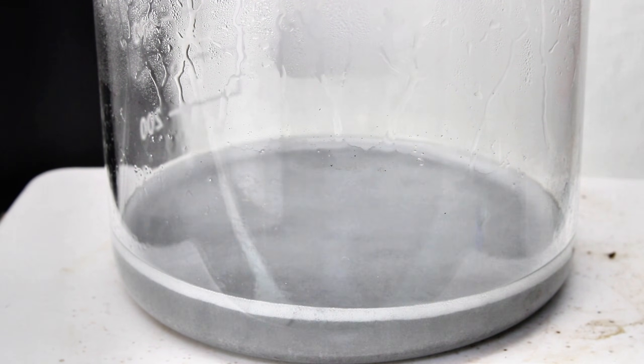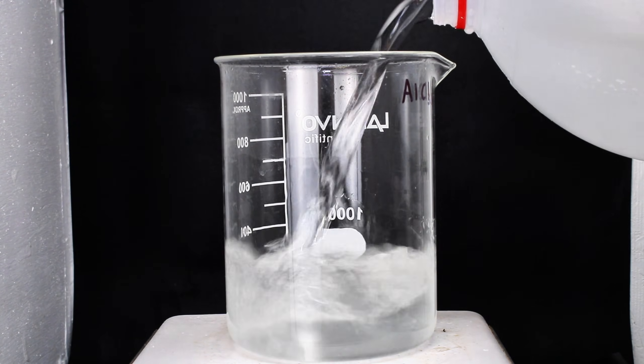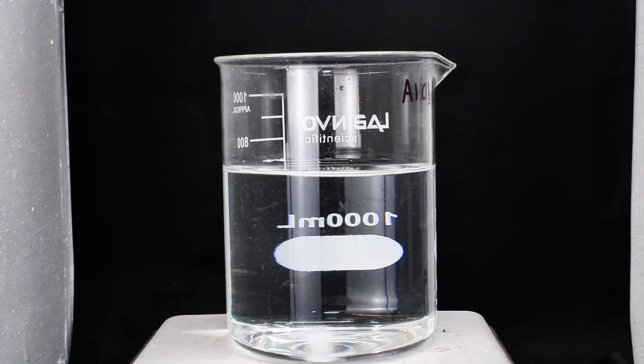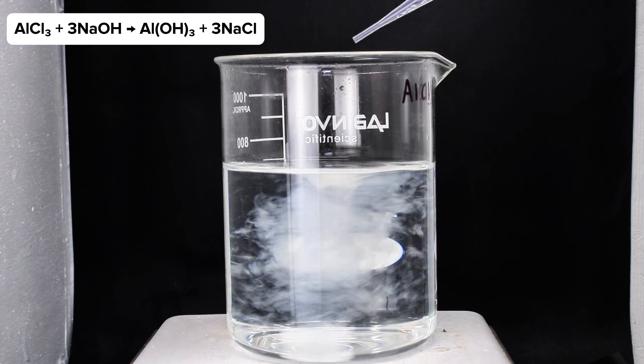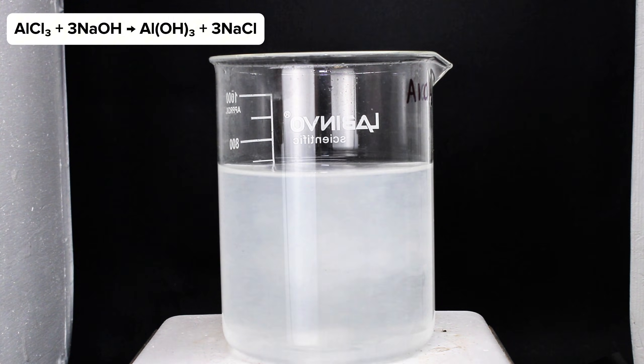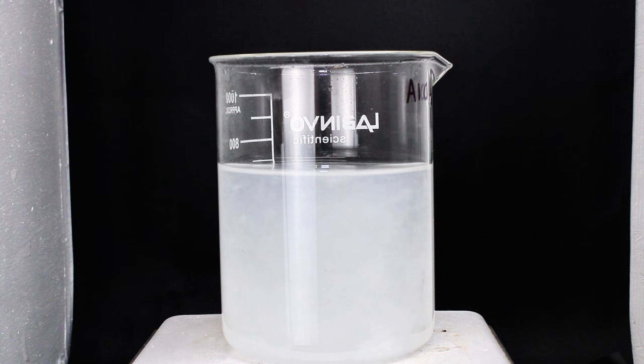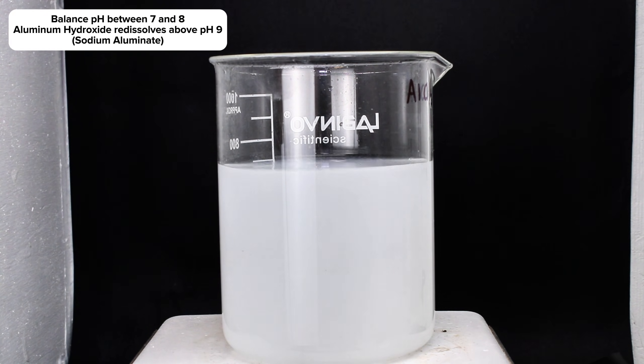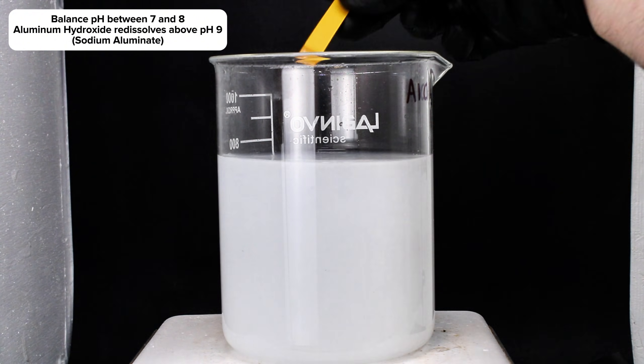it was next diluted with a large excess of water and slowly neutralized under constant stirring using 2 molar sodium hydroxide. This is a simple displacement reaction that results in the formation of soluble sodium chloride and insoluble aluminum hydroxide. It is important in this step though to only continue adding the sodium hydroxide until the pH is between 7 and 8, and this is because once the pH increases past 9, the aluminum will begin to re-dissolve as sodium aluminate.